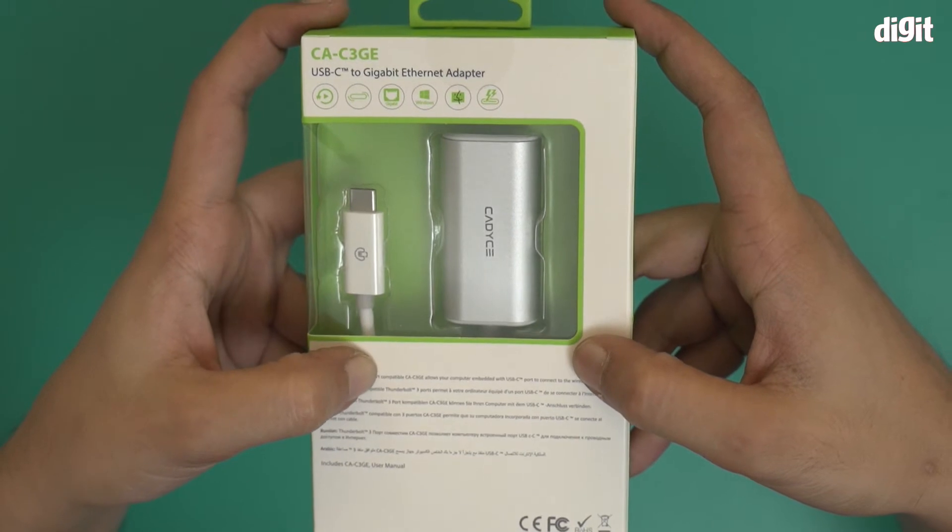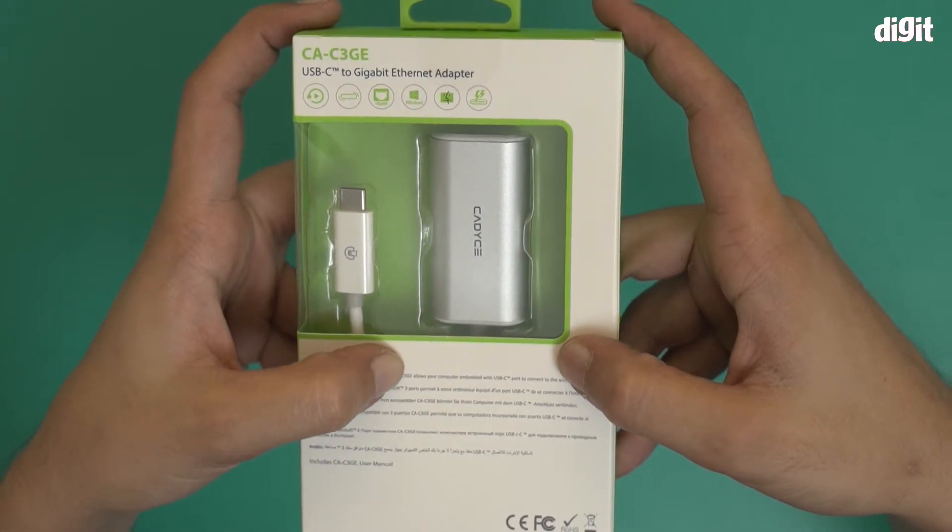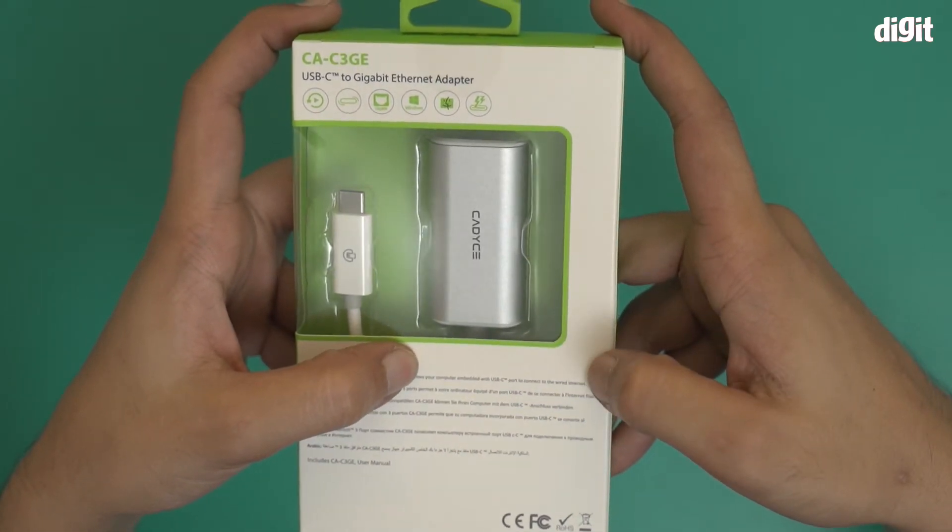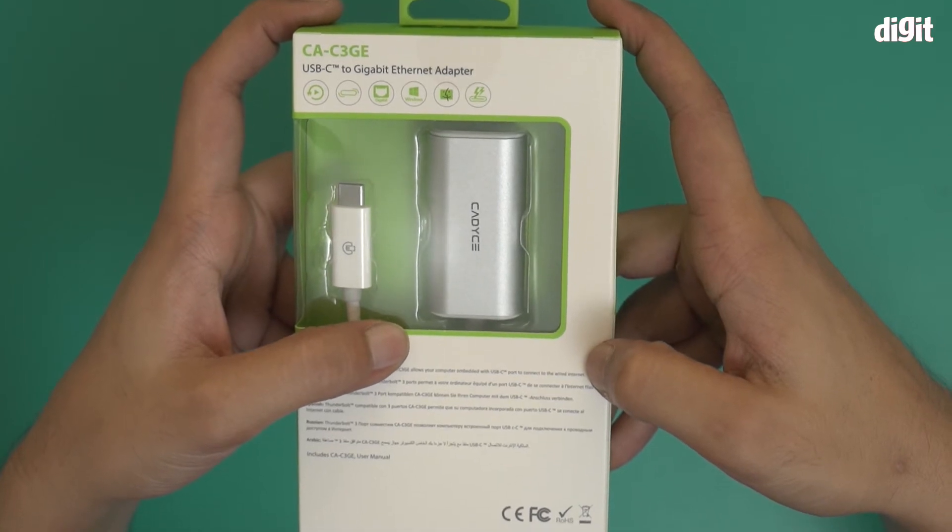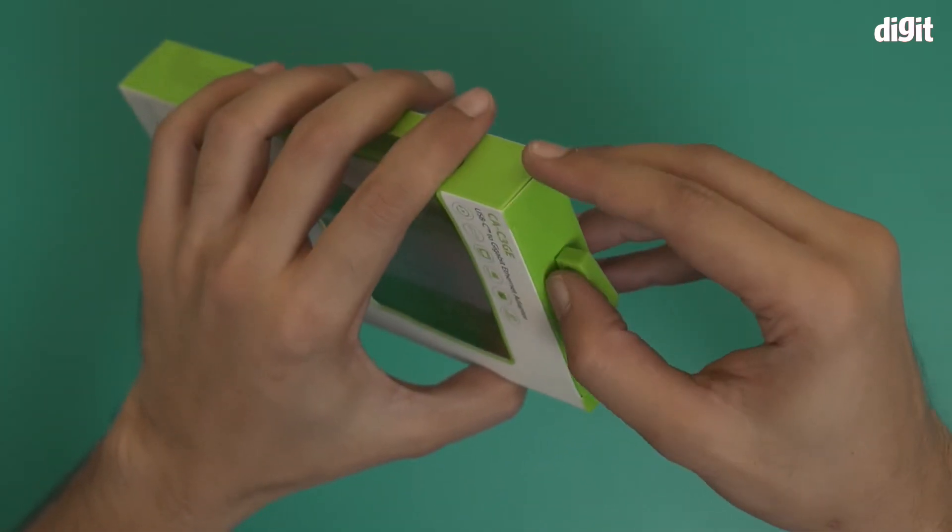It says Thunderbolt 3 port compatible. CA-C3GE allows your computer embedded with USB-C port to connect to wired internet. That's more or less it. Let's open this box and take a look inside.